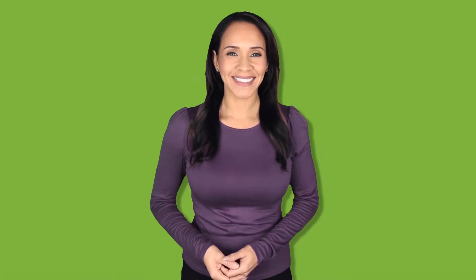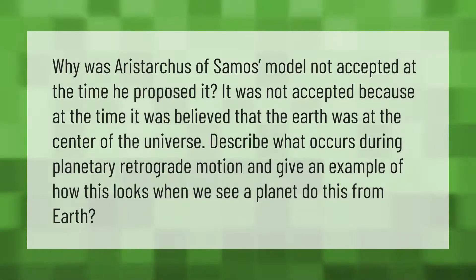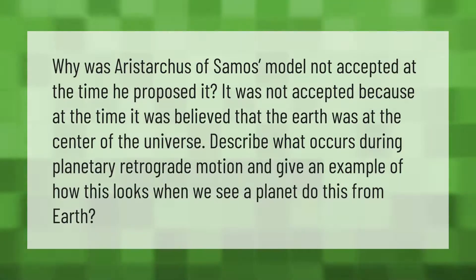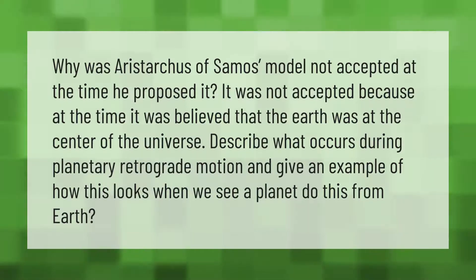Why was Aristarchus of Samos's model not accepted at the time he proposed it? It was not accepted because at the time it was believed that the earth was at the center of the universe. Describe what occurs during planetary retrograde motion and give an example of how this looks when we see a planet do this from earth.